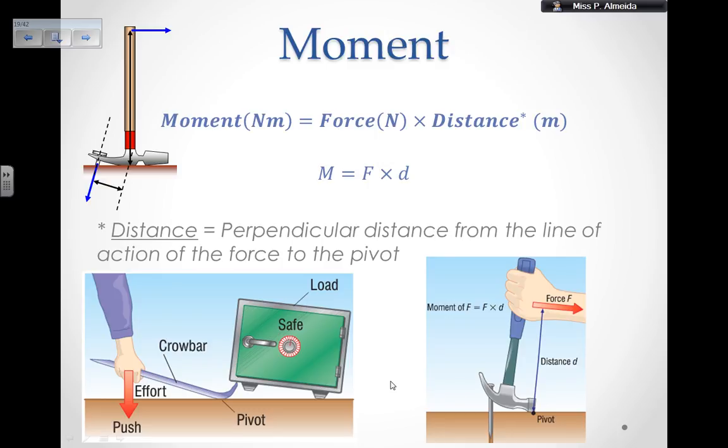Something goes around something, which that something is a pivot. Because moment is force times distance and force is in newtons and distance in meters, the moment, by definition, is newton meters.